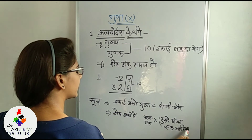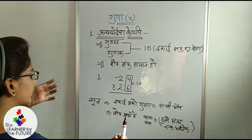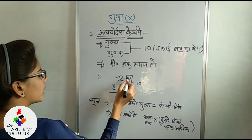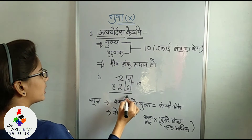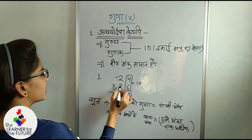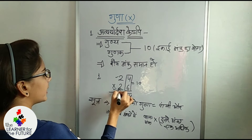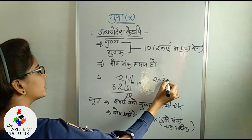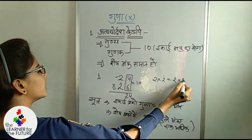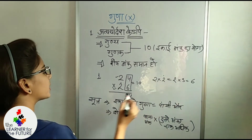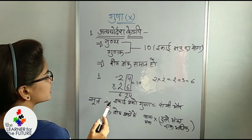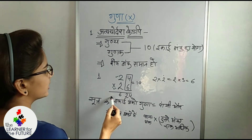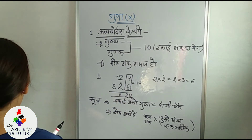This is the formula, the sutra, or the steps to understand. In both of them, multiply 6 and 4 to get 24. And we need to multiply the remaining digits: 2 into 2 plus 1, which is 2 into 3, giving us 6. So the answer will be 624. If we do this the normal way, the multiplication also gives 624.